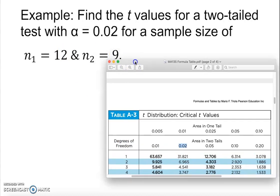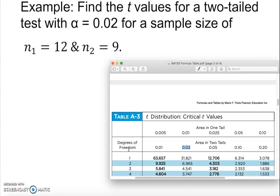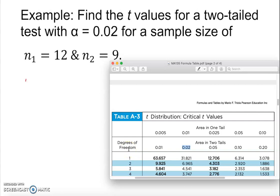Now, because there are two samples, n1 and n2, we have to work out the degrees of freedom. The degree of freedom is going to be n1 plus n2 minus 2, so it's going to be 12 plus 9 minus 2, and of course we're going to have 19 degrees of freedom.